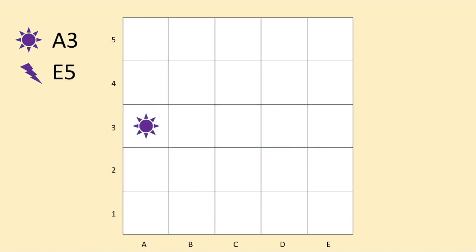Now, a lightning bolt at E5. I look for the E, follow that column, look for the 5, follow that row, and where they overlap is where I'm going to put my lightning bolt, at E5.